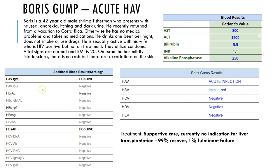Everything else is negative except for HB surface antigen antibody, which is included in the HBV vaccine, so he was likely vaccinated against HBV. The results: acute HAV infection, HBV vaccinated, negative for everything else. As far as treatment, we just watch this patient. There's no indication for liver transplant because with HAV, 99% are going to recover. Only 1% will move to fulminant failure.